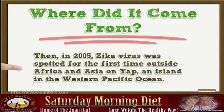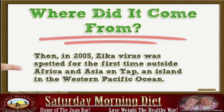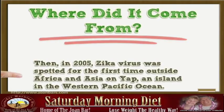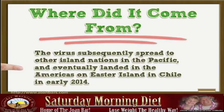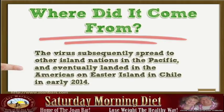Then, in 2005, Zika virus was spotted for the first time outside Africa and Asia on Yap, an island in the western Pacific Ocean. The virus subsequently spread to other island nations in the Pacific, and eventually landed in the Americas on Easter Island in Chile in early 2014.